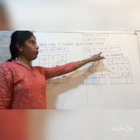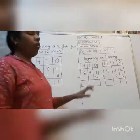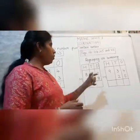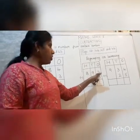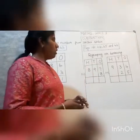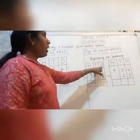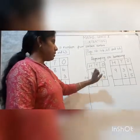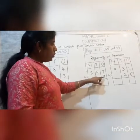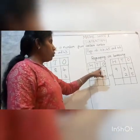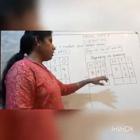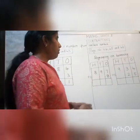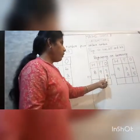Moving on to pages 44, 45, and 46, we have subtraction with regrouping or borrowing. What do we mean by regrouping or borrowing? When we don't have a bigger number on top, we need to borrow from the next tens place. We have ones, tens, and hundreds. Here we have a three-digit number and we need to subtract a one-digit number. So 7 minus 8 — 8 is the bigger number, so we go to the next place value, the tens, to regroup.